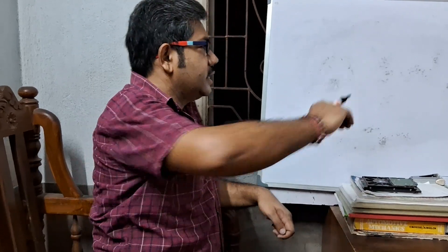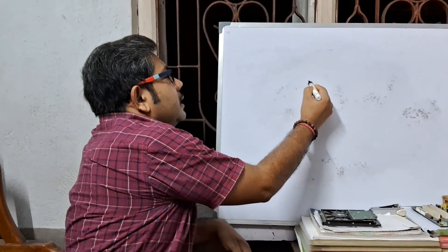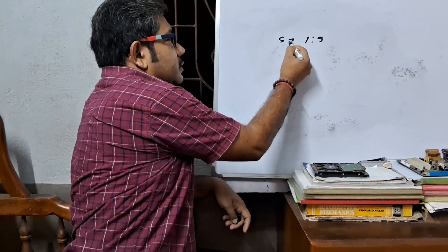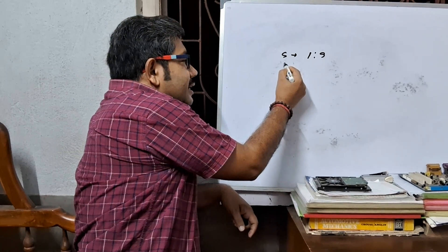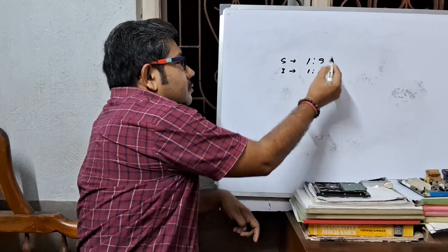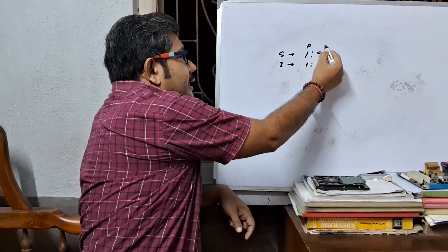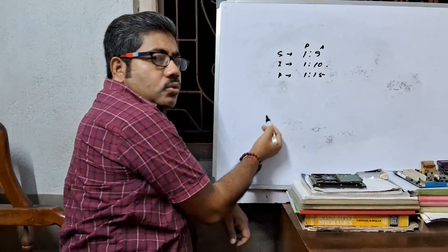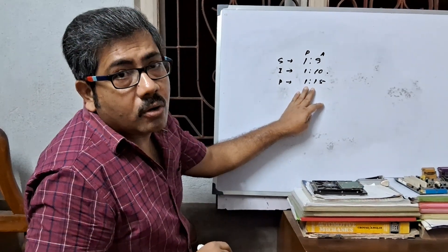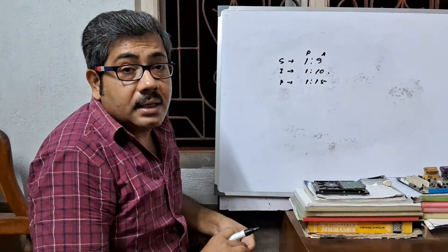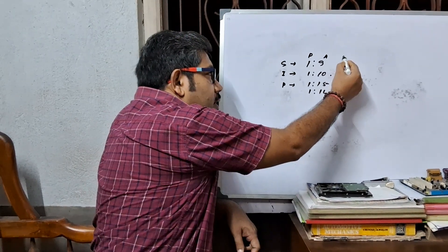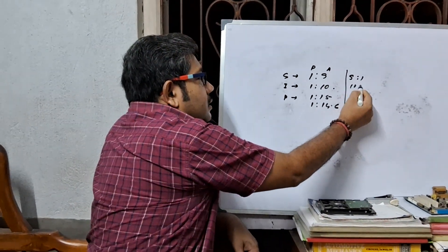At starting condition, the air-to-petrol ratio is 1:9. During idling condition it is 1:10 — here one means petrol and nine means air. During part throttle condition it will be 1:15; this is the normal air-fuel ratio. If chemically corrected, it will be 1:14.6. You can also express it in reverse: 9:1, 10:1, and so on.